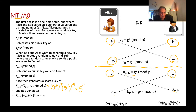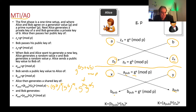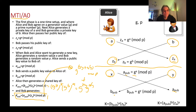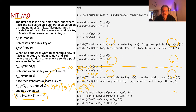That will become G to the XY times G to the AB, and then G to the XY plus AB becomes our shared key, that will be mod P. If we expand this out we should end up with the same shared value.